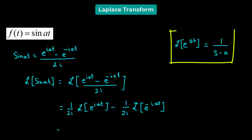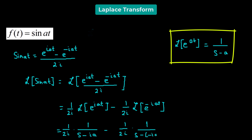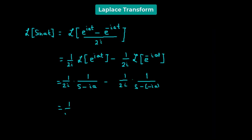So we can use this fact and get 1 over 2i times the Laplace transform of e raised to the power of iat, which becomes 1 over s minus ia — here we have replaced a with ia — minus 1 over 2i times 1 over s minus negative ia. Factoring out 1 over 2i and combining the two terms gives the product s minus ia times s plus ia in the denominator, and in the numerator we have s plus ia minus of s minus ia.